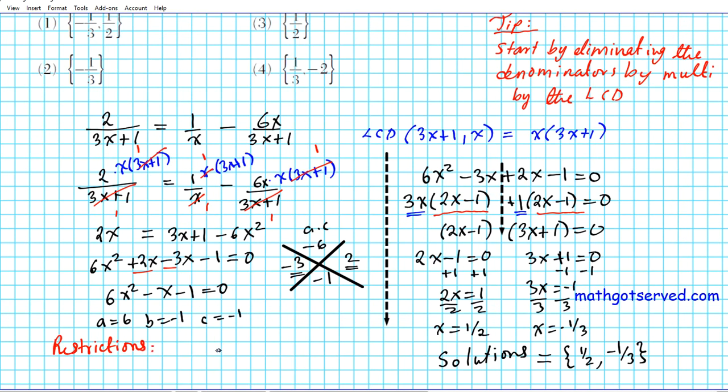There are restrictions to ensure that our denominator does not attain a 0 value, which results in the equation being undefined. So we had x times 3x plus 1, so just set both denominator factors to 0. So x cannot be 0, and 3x plus 1 cannot be 0 also.